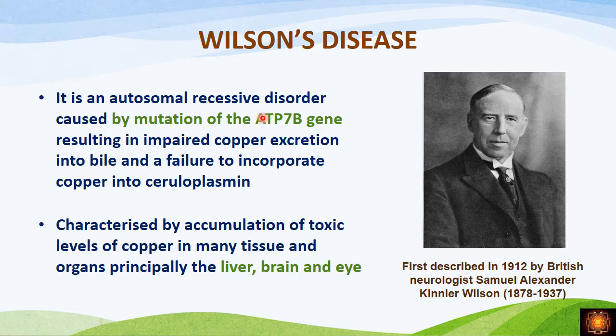Wilson's disease is an autosomal recessive disorder, mainly caused by mutation of the ATP7B gene. This gene is mainly responsible for the production of a copper-transporting protein, which helps to excrete excess copper into the bile or helps to incorporate copper into the ceruloplasmin.